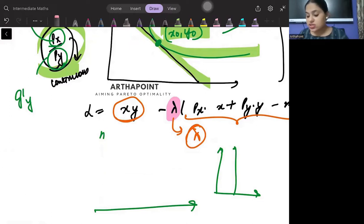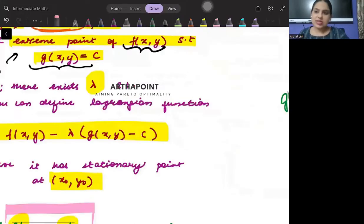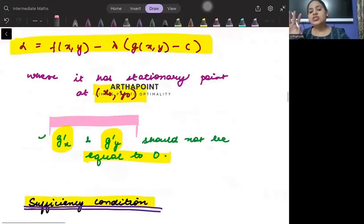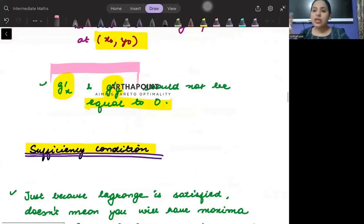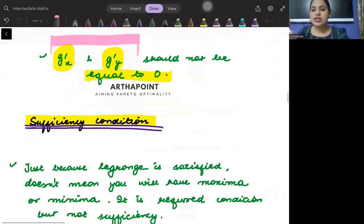So, if the price of one good is 0, toh wo good toh free good ho gaya. You can consume any amount of that good. So, then I can't set up the Lagrange. So, when G dash x and G dash y are 0, you cannot go ahead and you cannot set up a Lagrange. I hope this is clear to you.